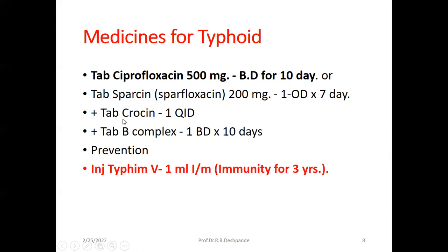Antipyretic tablet crocine — crocine is the brand name and paracetamol is the generic name — one tablet QID, four times a day: morning, noon, evening, and at night. Tablet B-complex, one BD, for 10 days.